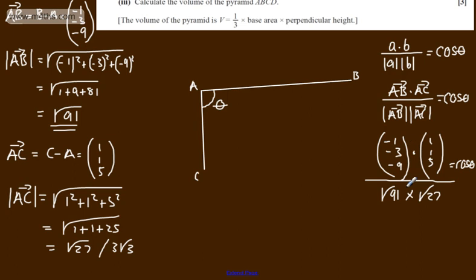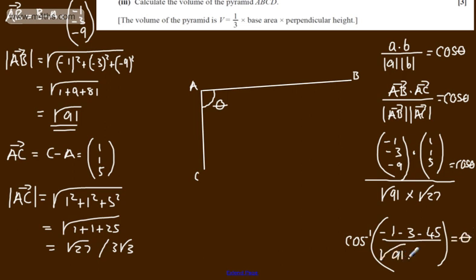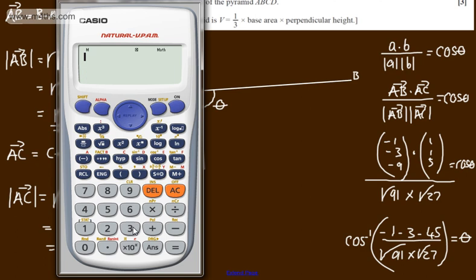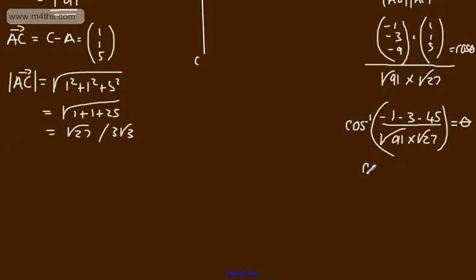In the numerator we get (-1)(1) + (-3)(1) + (-9)(5) = -1 - 3 - 45 = -49. Taking the inverse cosine: θ = cos⁻¹(-49 / √(91 × 27)). Make sure you're in degrees mode — Shift, Mode, 3 if unsure. That gives θ = 171.3° to 1 decimal place.